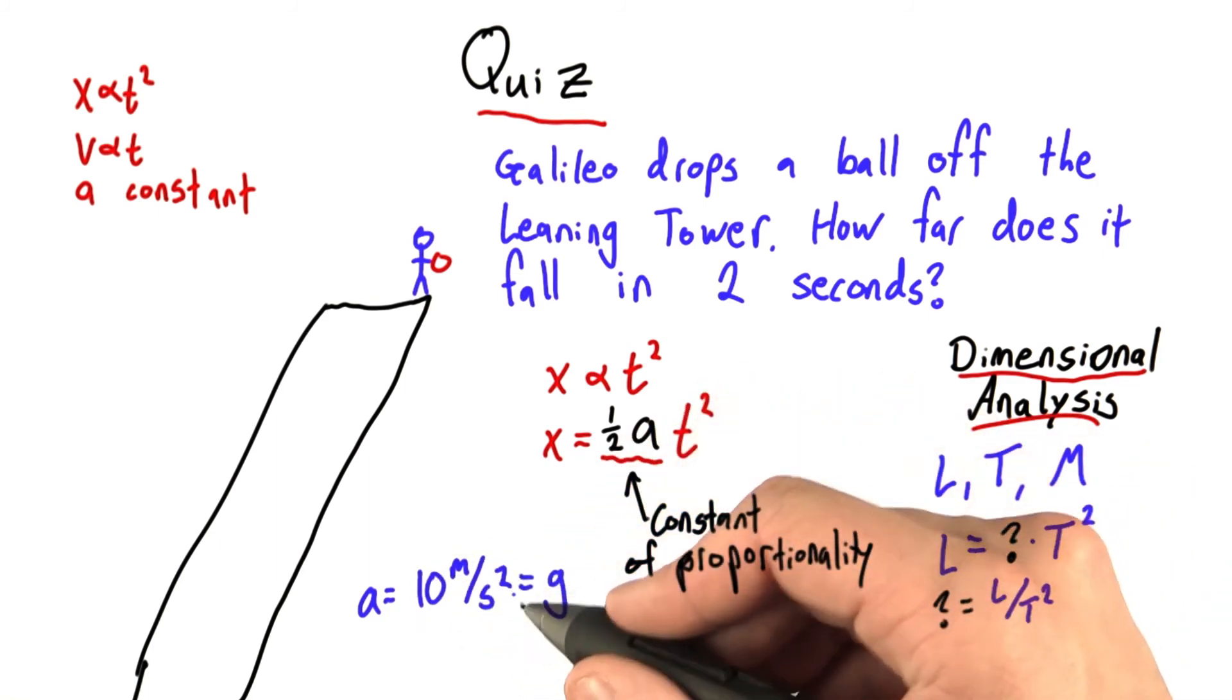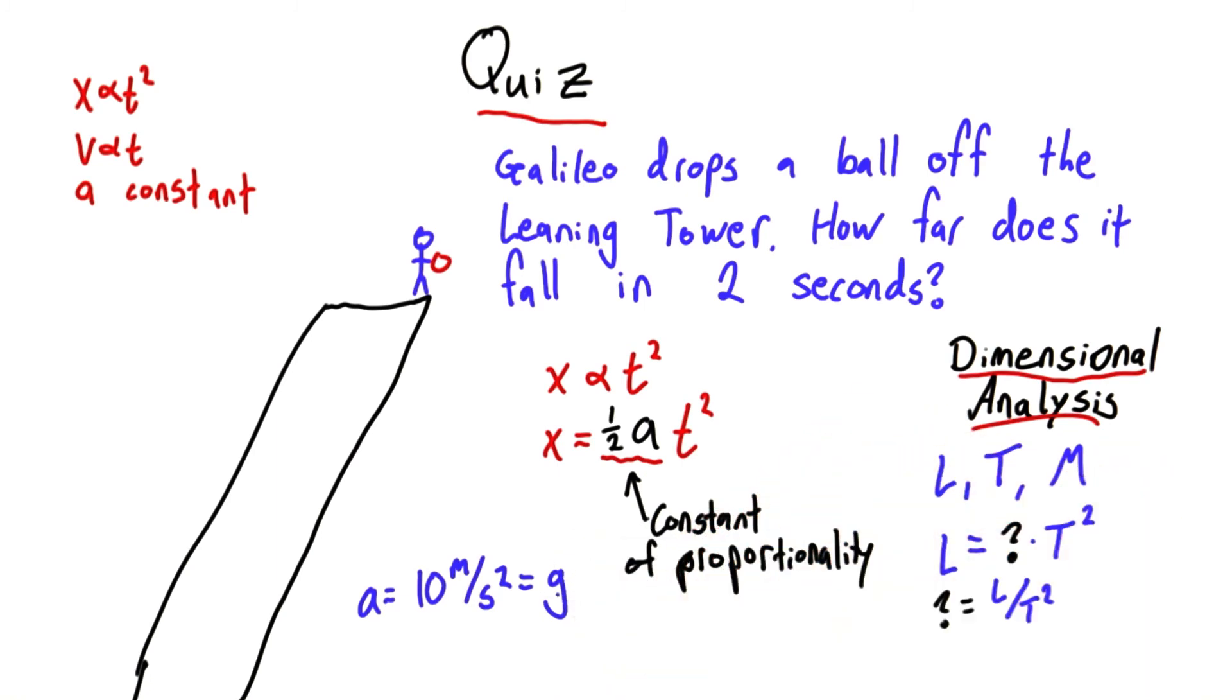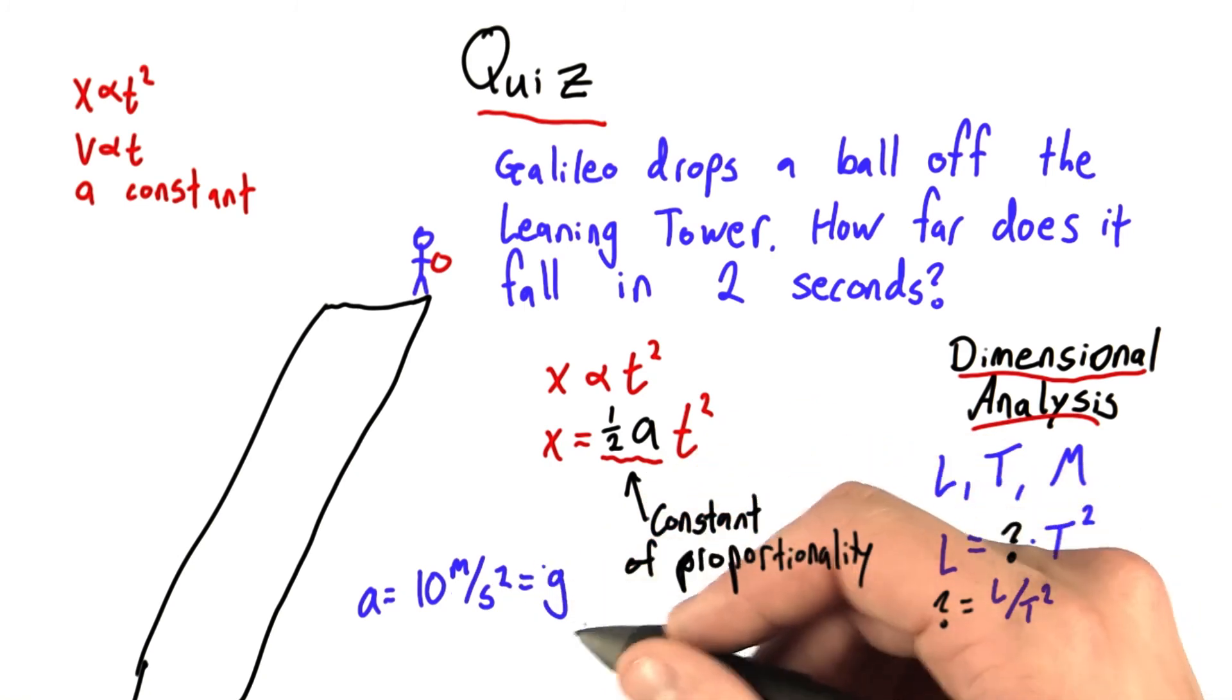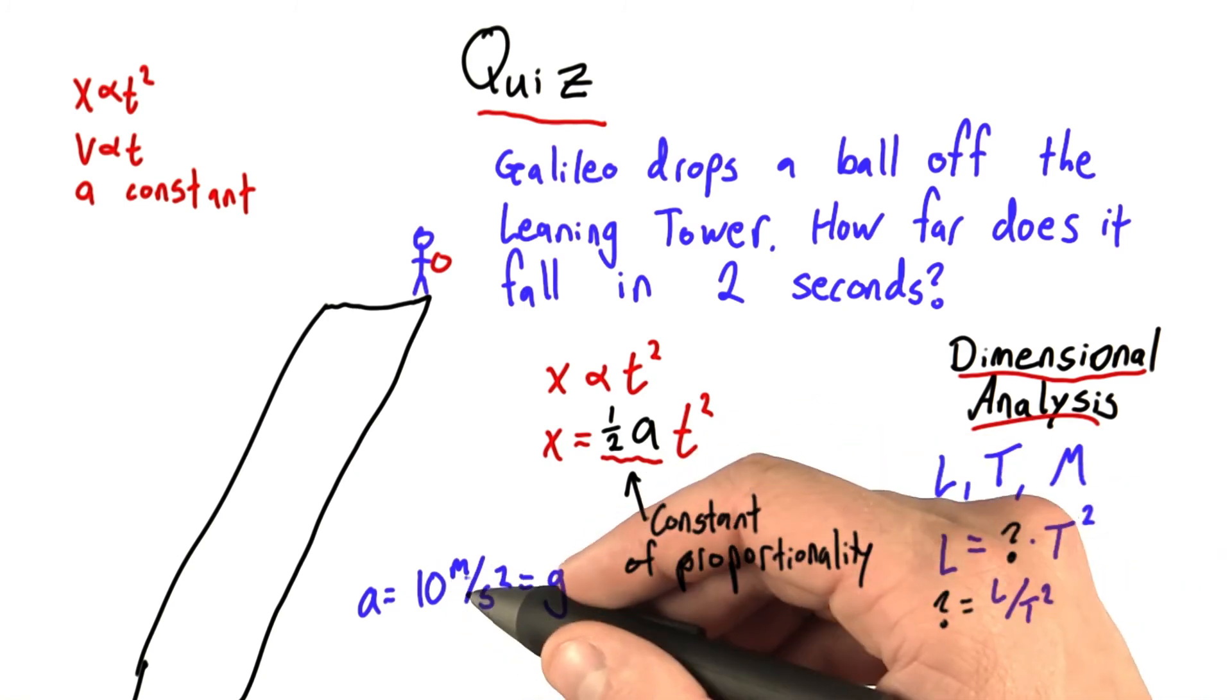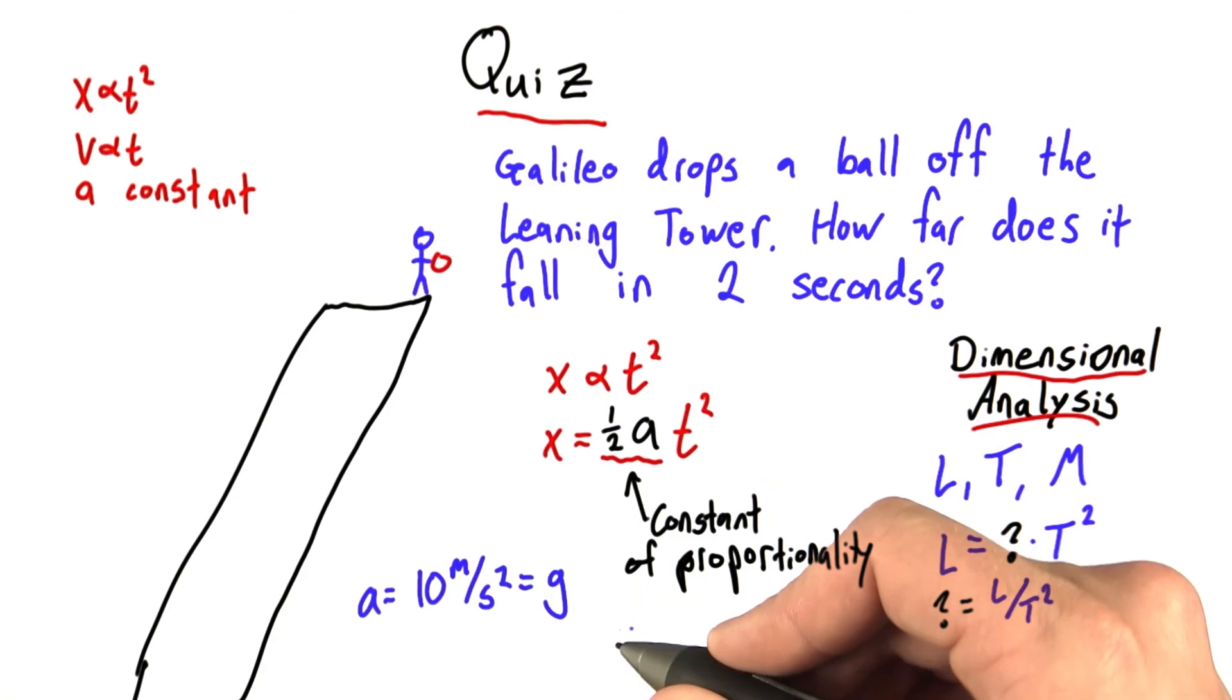In fact, this number is so important, we give it the abbreviation little g. But keep in mind, we only use this number when objects are in free fall. When an object's rolling, this acceleration will be, well, you tell me. Does an object rolling accelerate faster or slower?